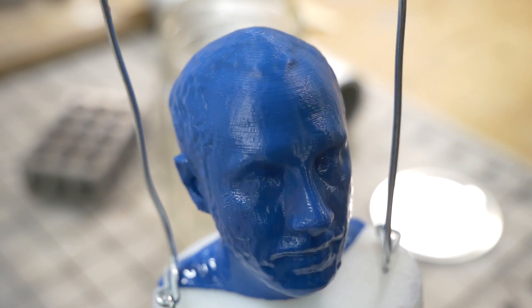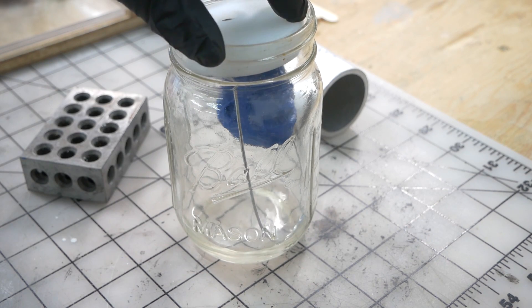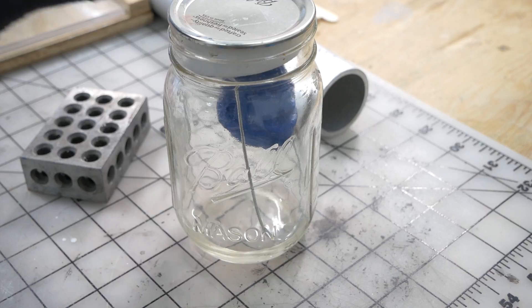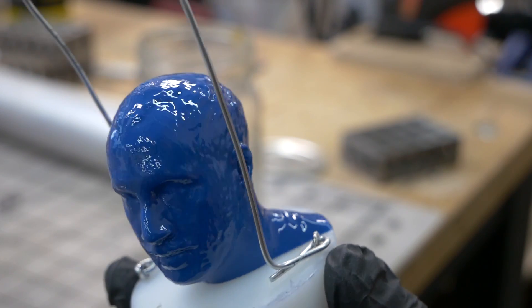But the top of the print wasn't getting as melty as the bottom. Lining the container with acetone soaked paper towels would help with the distribution, but instead we just flipped the print over and left it in for another hour. After that, the print looked nice and smooth.